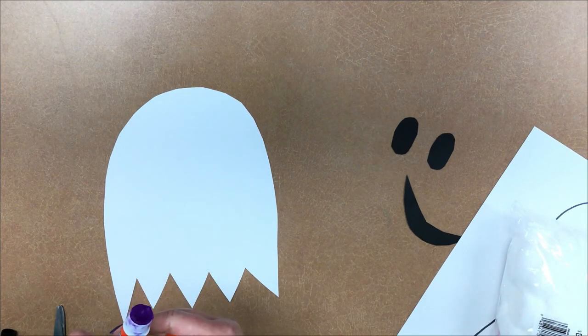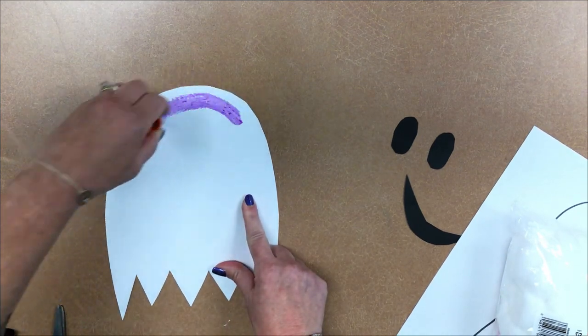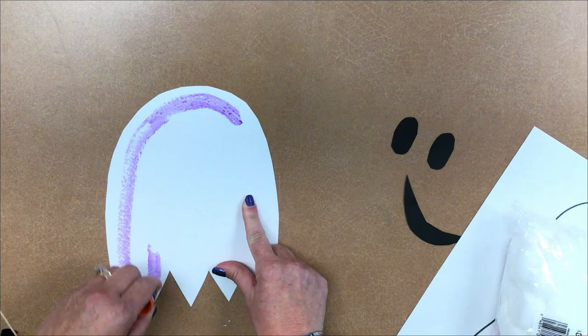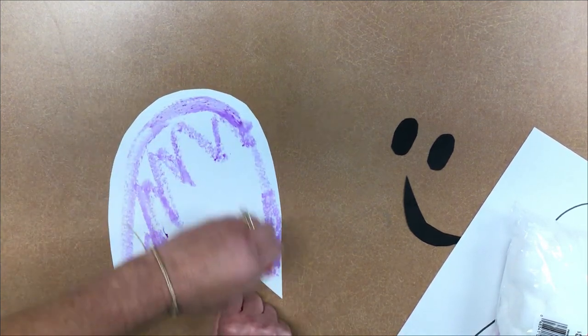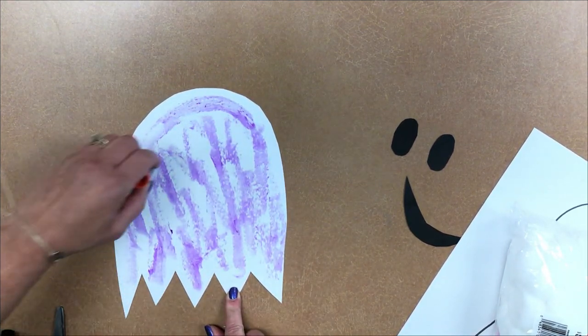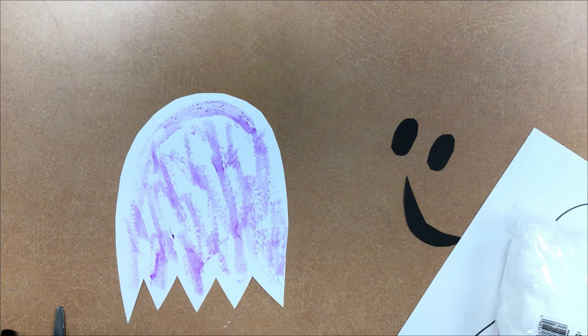Take your glue stick or your Elmer's glue, whichever one. Both will work. And put glue all over your ghost. And you might have to add more if it starts to dry. This is the fun part.